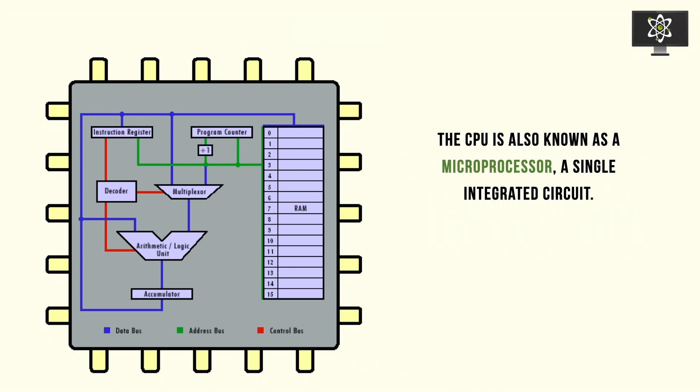The CPU is also known as a microprocessor nowadays. In the past, CPUs were made of many different integrated circuits connected within a circuit board. But now it's a single integrated circuit, which is why it's called a microprocessor.